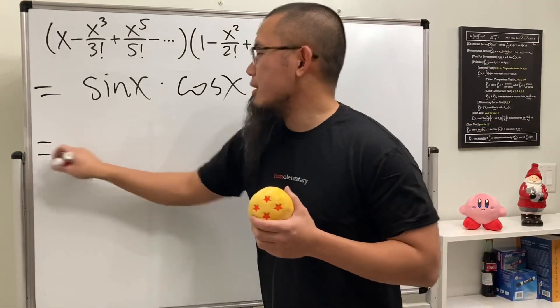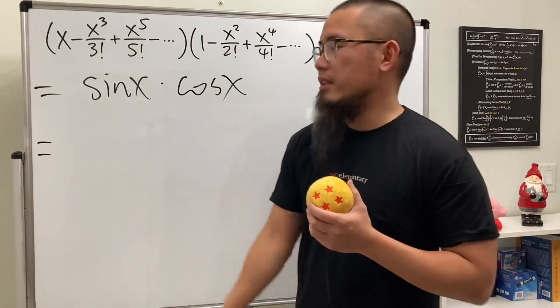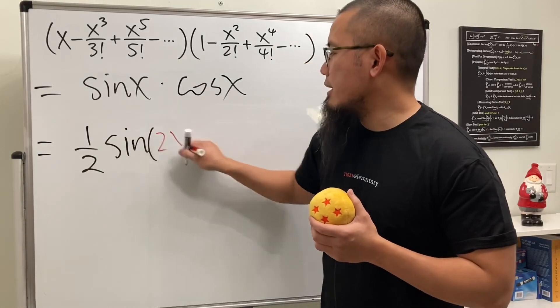So what do we do next? Well, don't worry, because this right here, we can use the identity. This right here is almost the same as the half-angle identity, but we just need to multiply by 1/2 of sine of 2x.